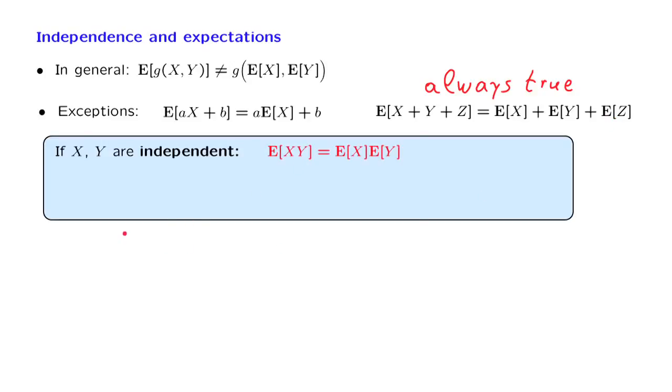We are dealing here with the expected value of a function of random variables, where the function is defined to be the product function. So to calculate this expected value, you can use the expected value rule, and we are going to get the sum over all x, the sum over all y, of g of xy. But in this case, g of xy is x times y. And then we weigh all those values according to the probabilities as given by the joint PMF.